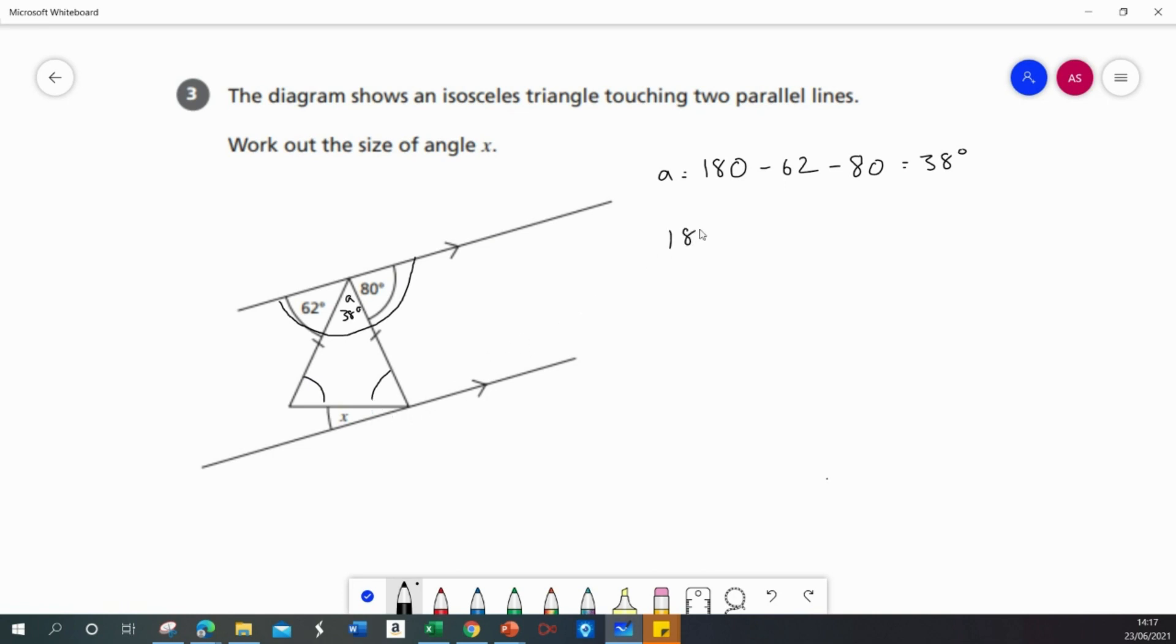So I'm now going to subtract 38 from 180 and that leaves me with 142 degrees. That tells me that these two base angles, let's call them B, added together equal 142. So if two base angles equals 142 degrees, then one base angle must equal 71 degrees. So each one of these base angles equals 71 degrees.